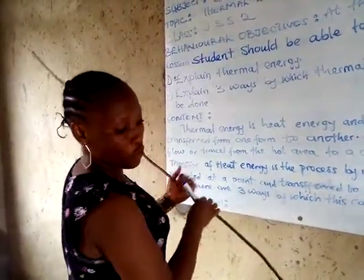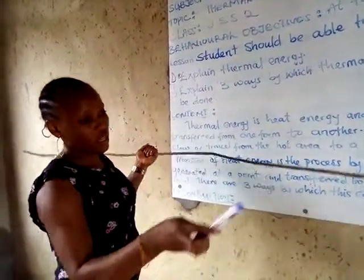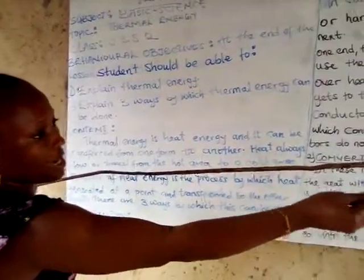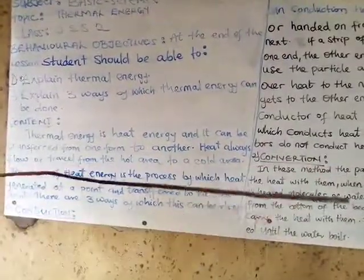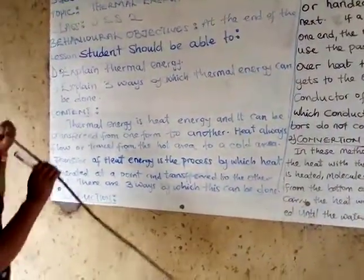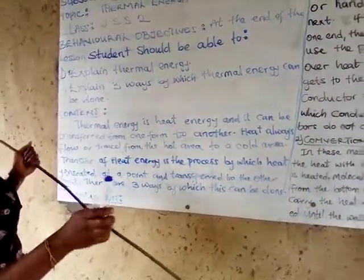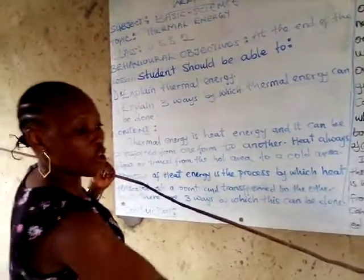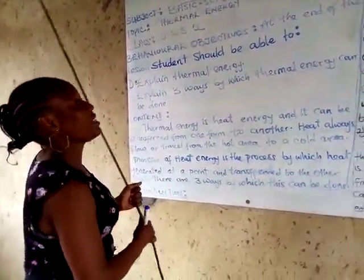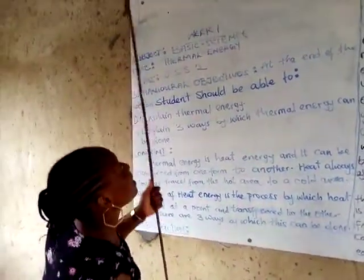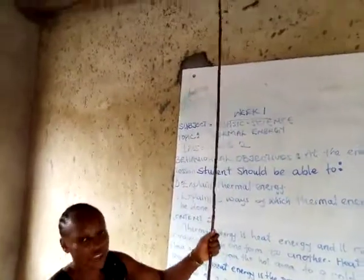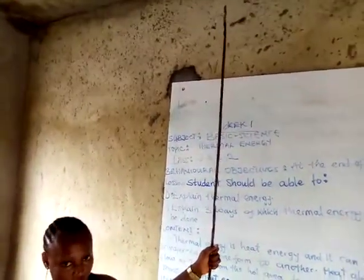For example, if you put this end part of the iron rod in the fire, you will find that the heat is going to travel gradually until it gets to the last end of the iron rod.